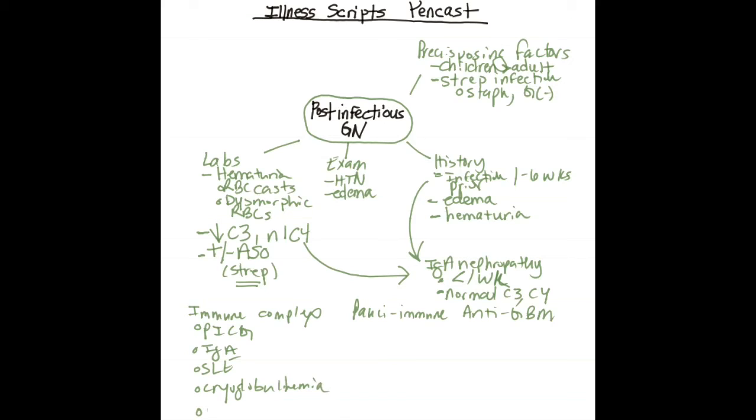Pauci-immune literally means few or no immune complexes, and the two major types are granulomatosis with polyangiitis or GPA like we've already talked about, and microscopic polyangiitis or MPA. As we discussed before as well, the major anti-GBM glomerulonephritis to consider is Goodpasture's.